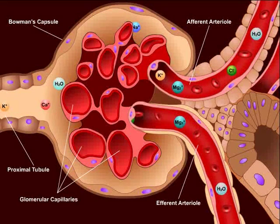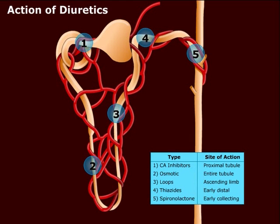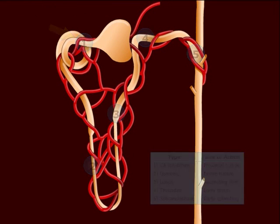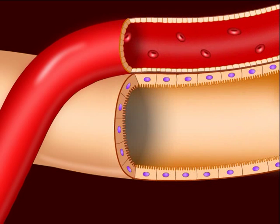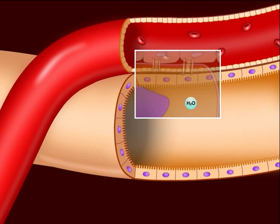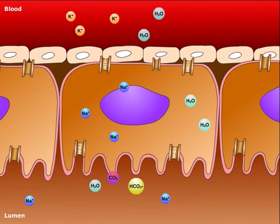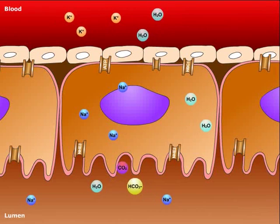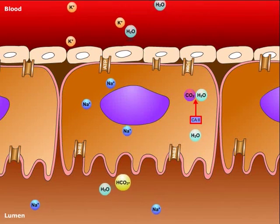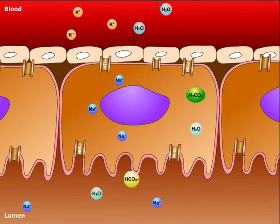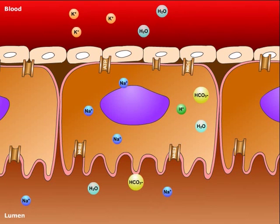Now that we have reviewed glomerular filtration, let's proceed to regional transport and the mechanism of action of diuretics. Let's take a closer look at the proximal tubule, the portion of the nephron that is most active in reabsorption, and is the site of action for carbonic anhydrase inhibitors. Carbon dioxide easily diffuses from the lumen of the proximal tubule into epithelial cells. Once inside, carbon dioxide binds to water, and with the help of carbonic anhydrase 2, carbonic acid is formed. It then dissolves to form hydrogen and bicarbonate.